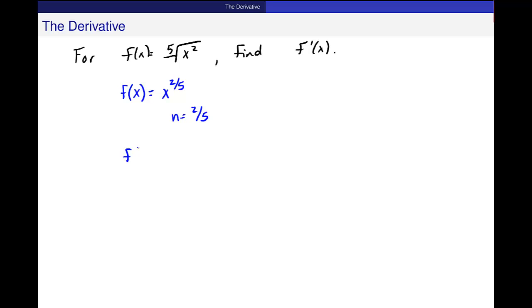So f prime of x equals 2 fifths x to the n minus 1 up here. So that is 2 fifths minus 1. This is 2 fifths x, and 2 fifths minus 1 is minus 3 fifths.